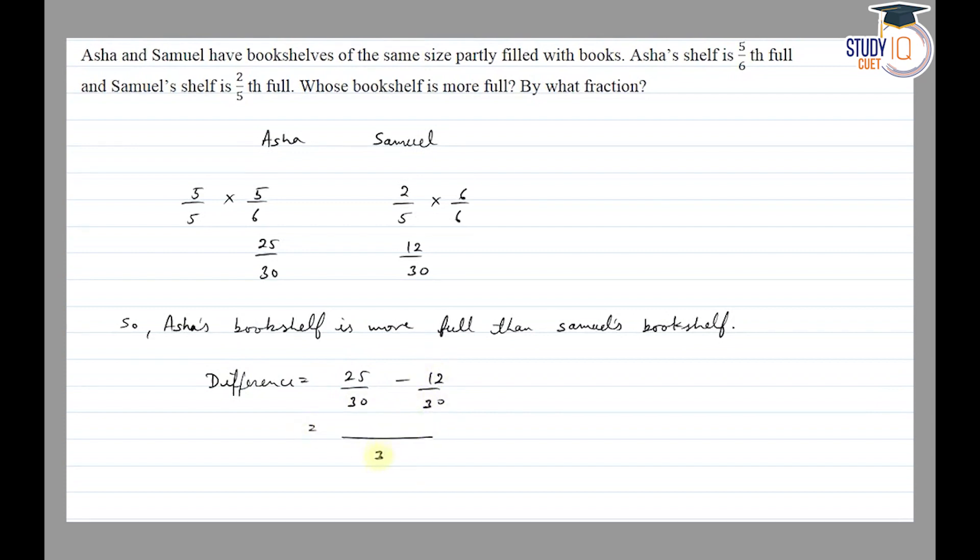For the difference, we directly subtract. So 25 minus 12 is equal to 13 by 30.